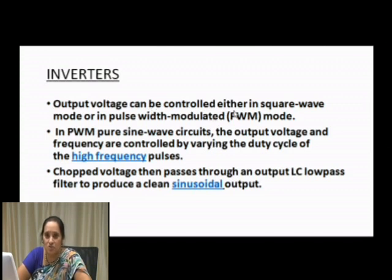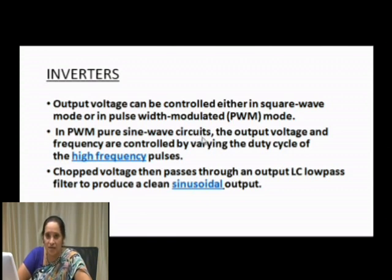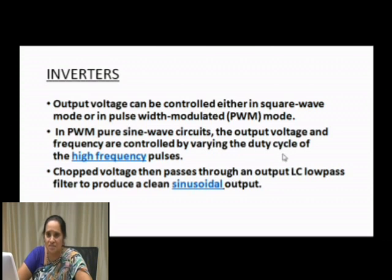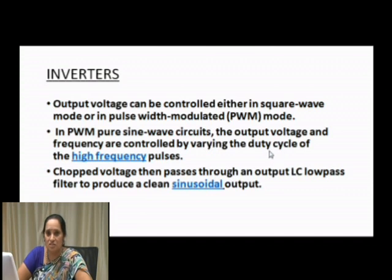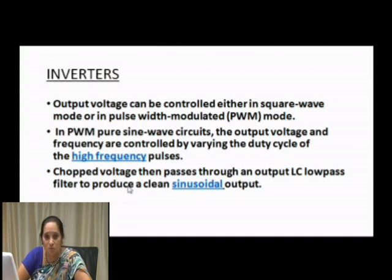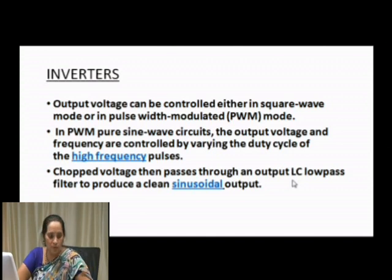The output voltage can be controlled in square wave mode, but the most widely used circuit is PWM — pulse width modulated pure sine wave circuits. The output voltage and frequency are controlled by varying the duty cycle, which is the ratio of on-time to off-time (T-on to T-off) of the SCR. To remove unwanted harmonics and obtain a clean sinusoidal output, the signal passes through output LC low-pass filters.